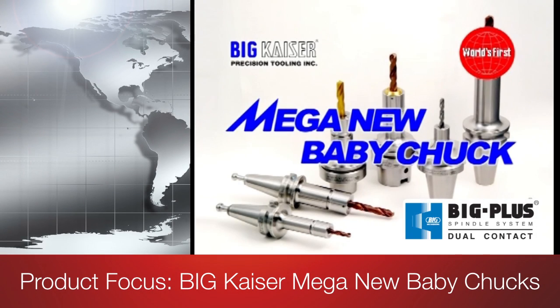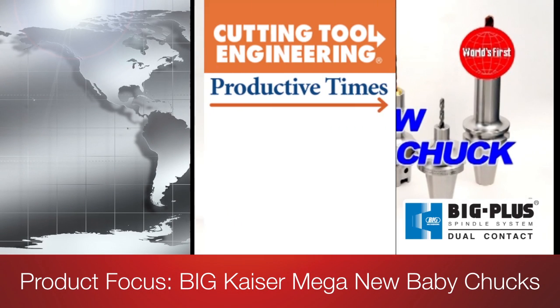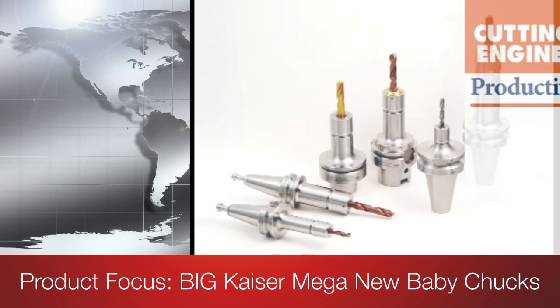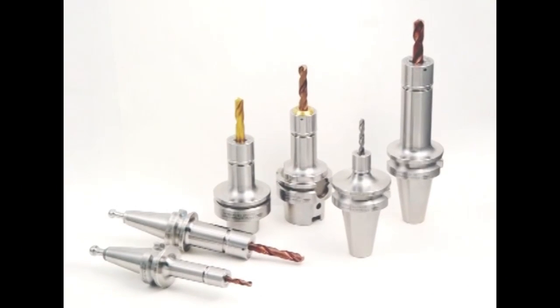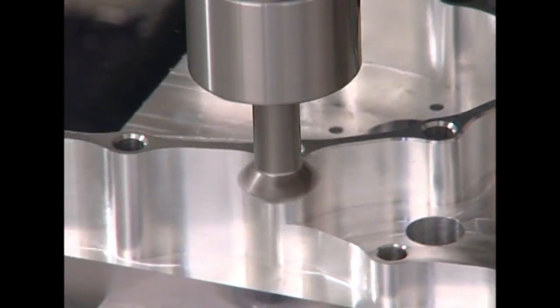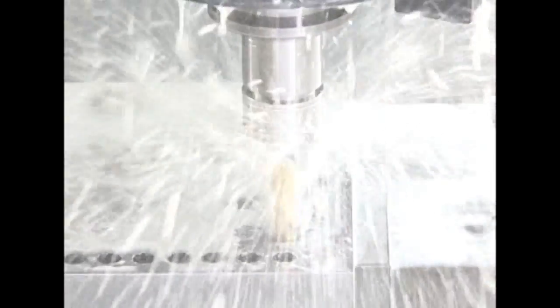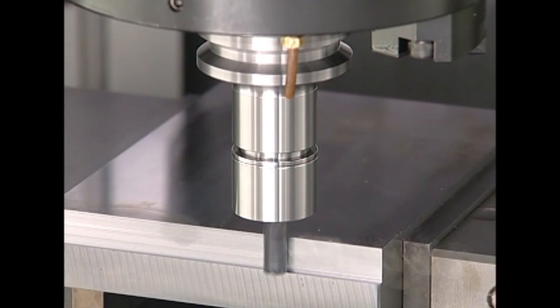The Mega New Baby Chuck offers excellent run-out with a wide range of tooling options. Good run-out accuracy has a large positive influence on part quality, surface finish, tool life, and machine utilization.